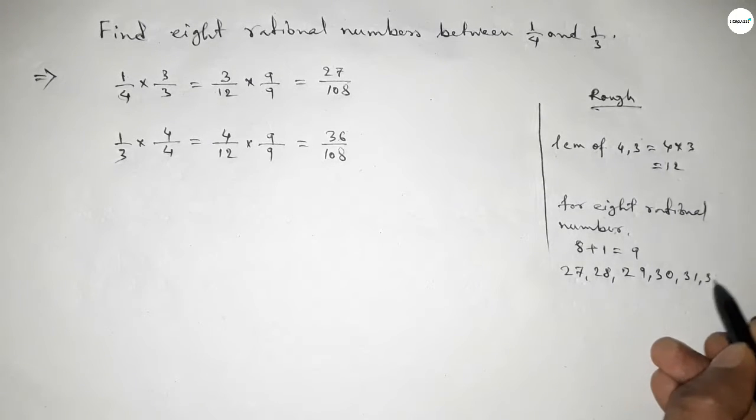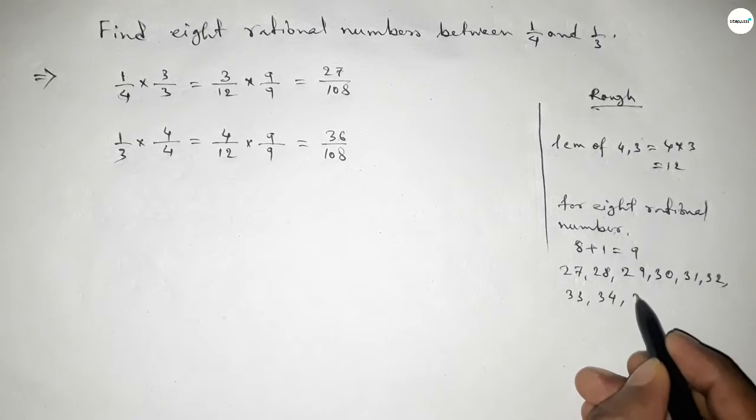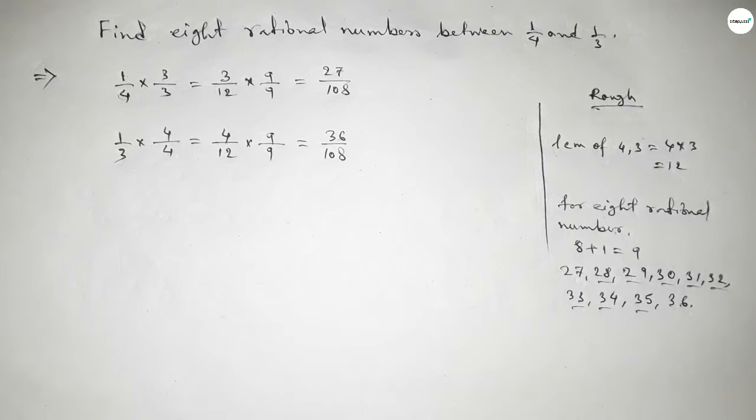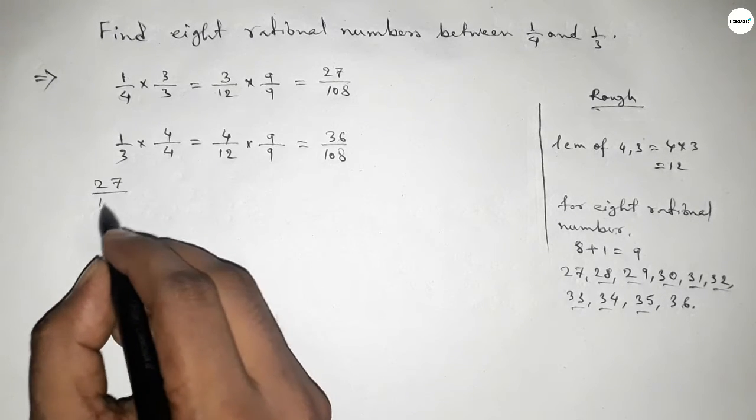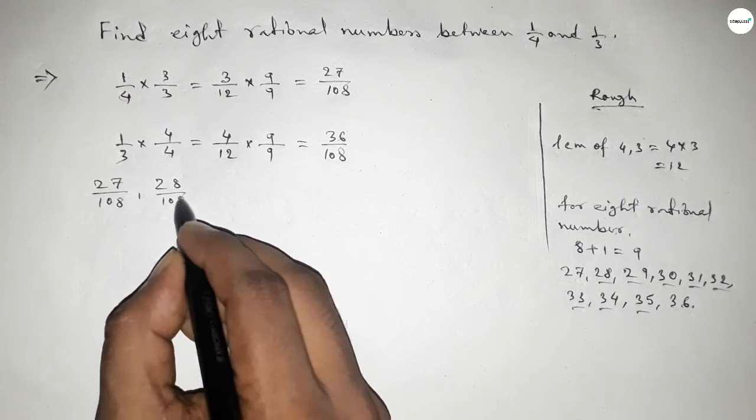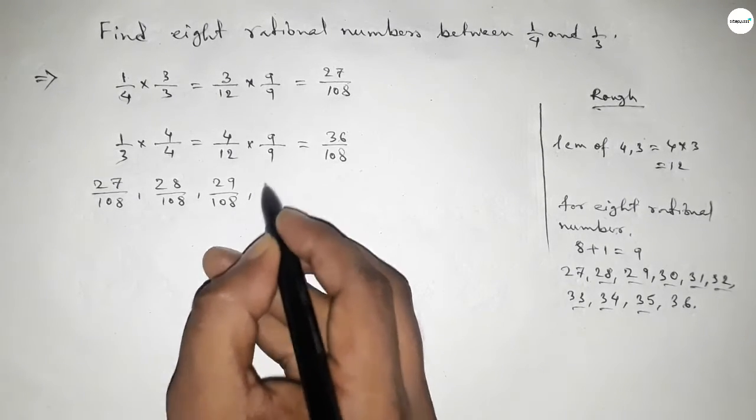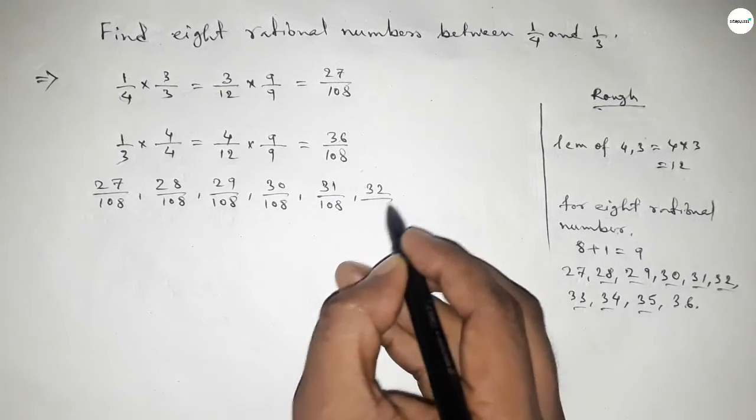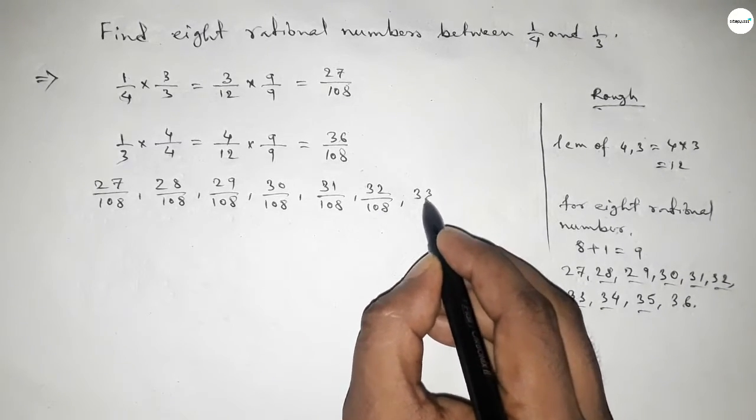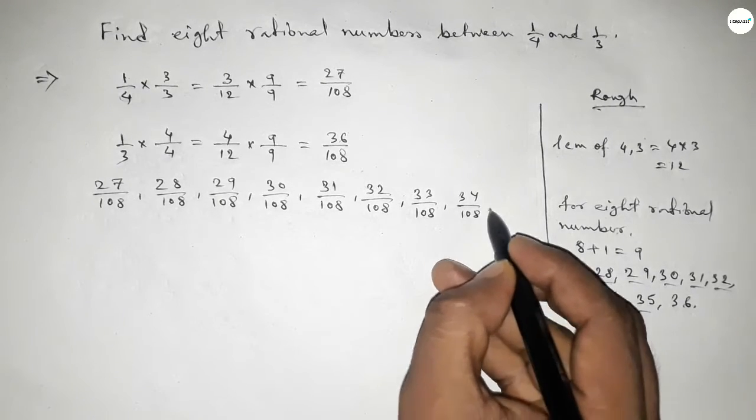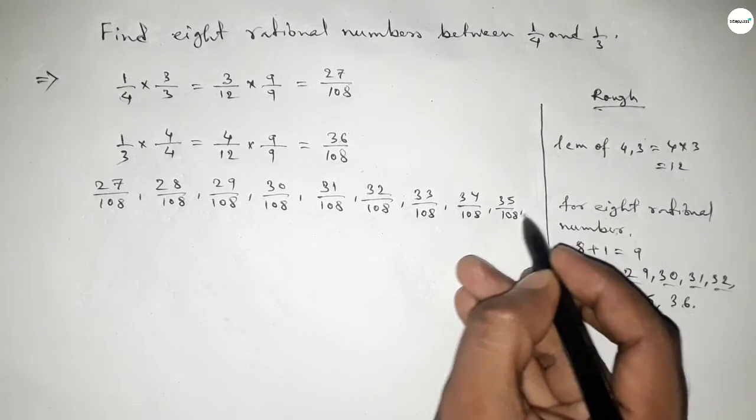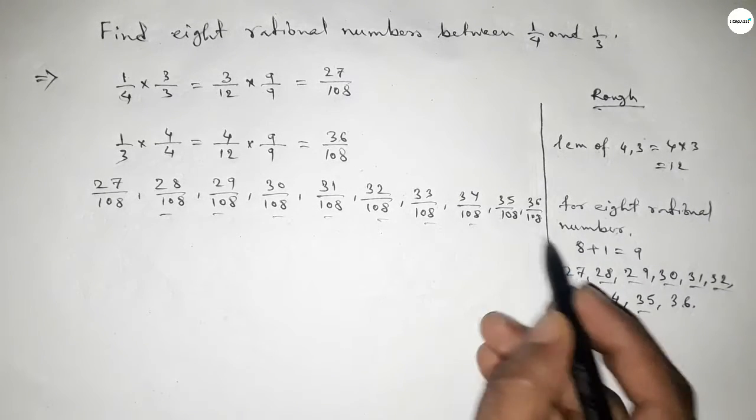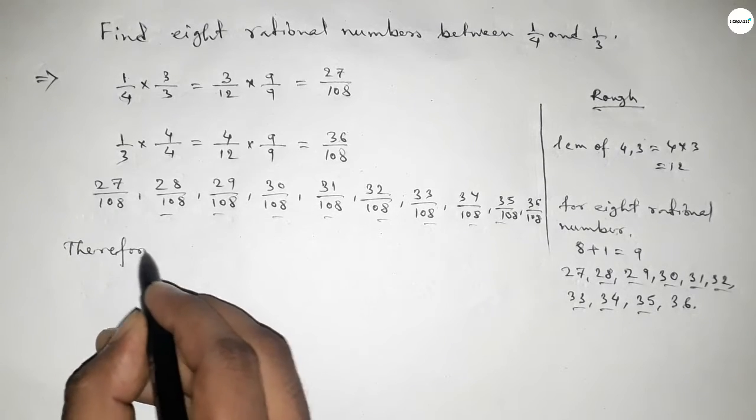Now between 27 and 36 we can get 8 natural numbers, and by these natural numbers we can form 8 rational numbers. All the rational numbers are 27/108, 28/108, 29/108, 30/108, 31/108 up to 36/108. Among these, these are the required 8 rational numbers between 1/4 and 1/3.